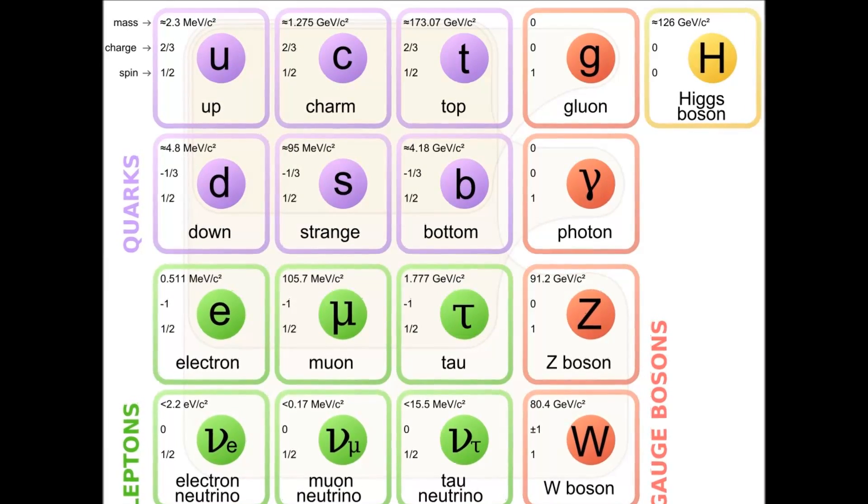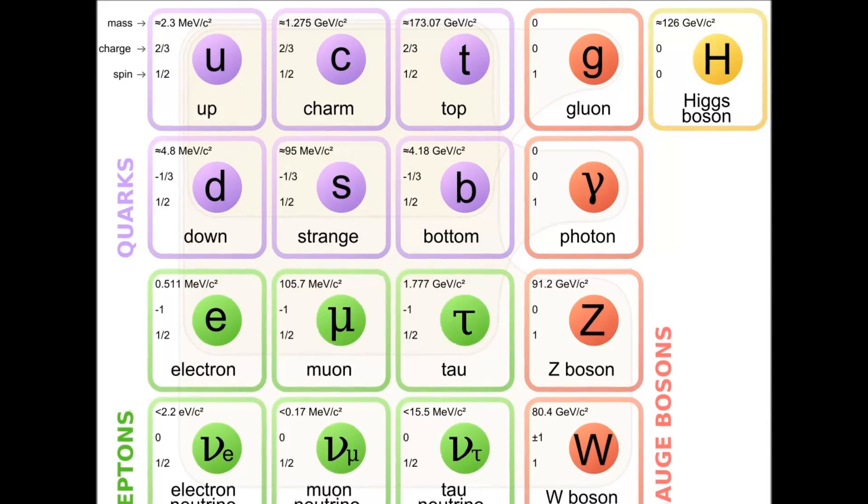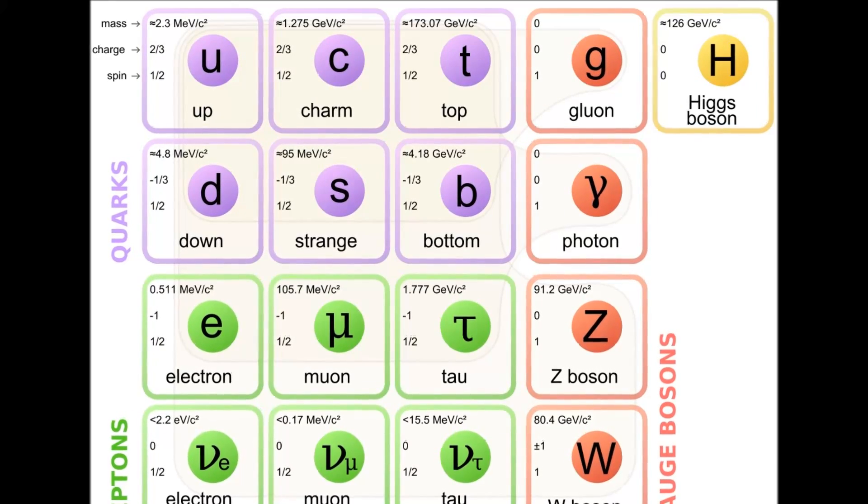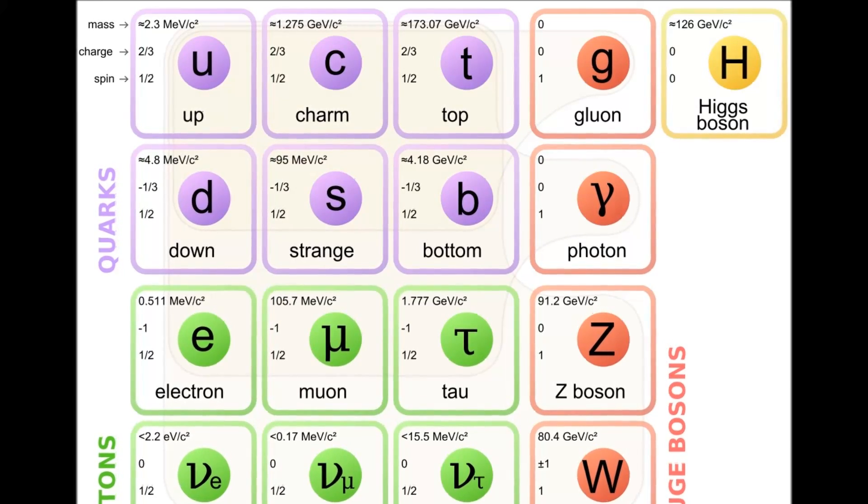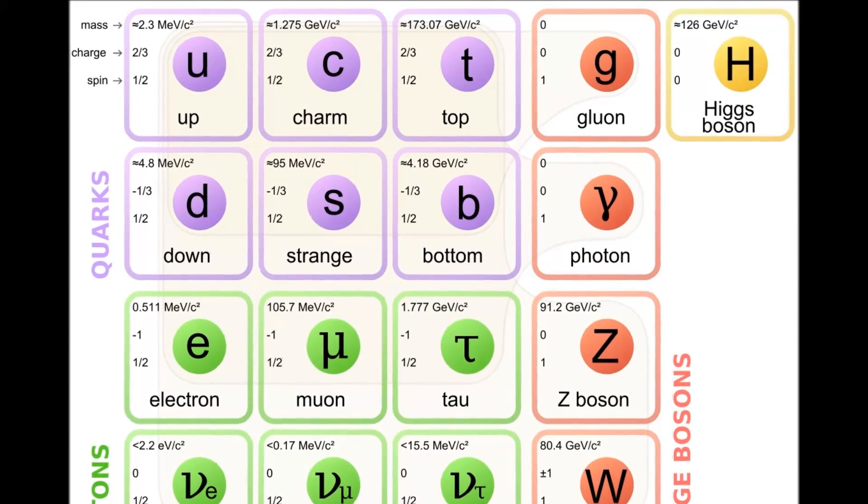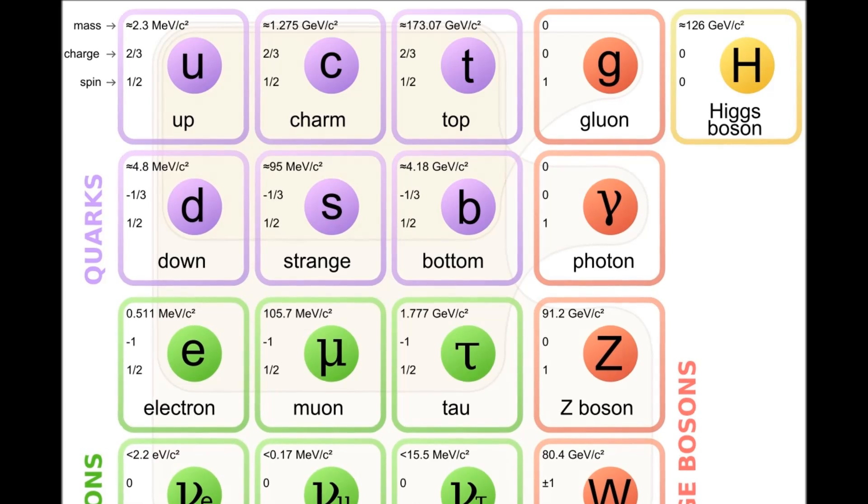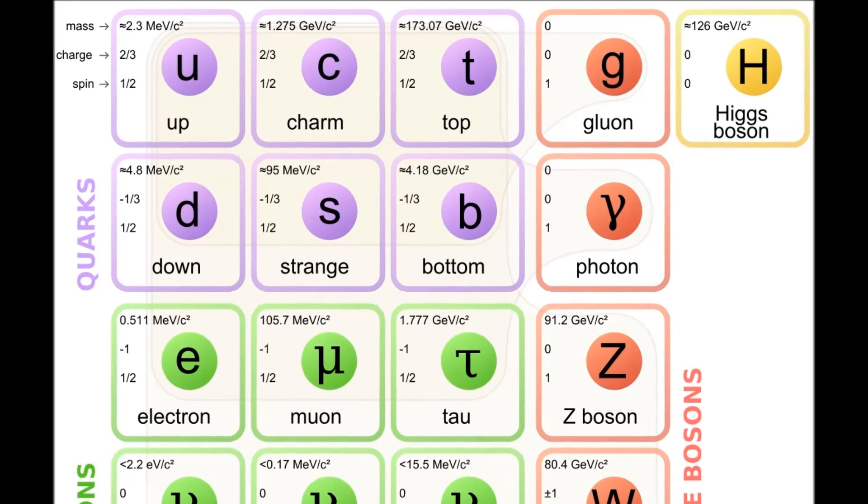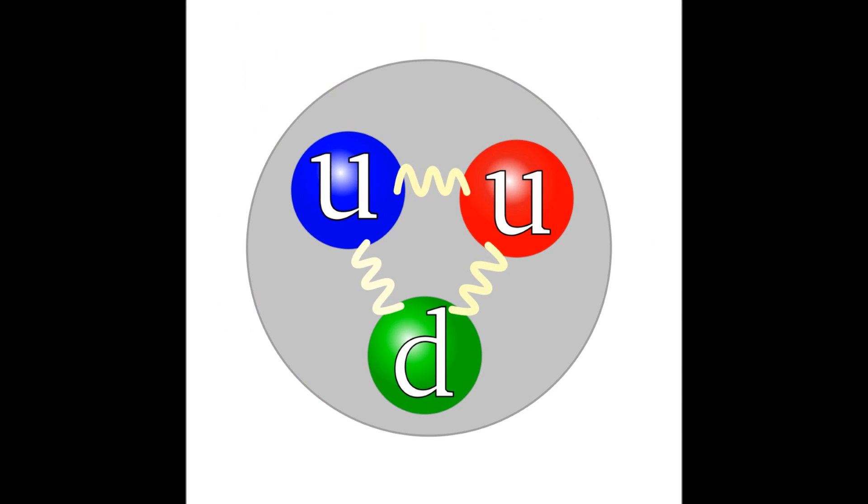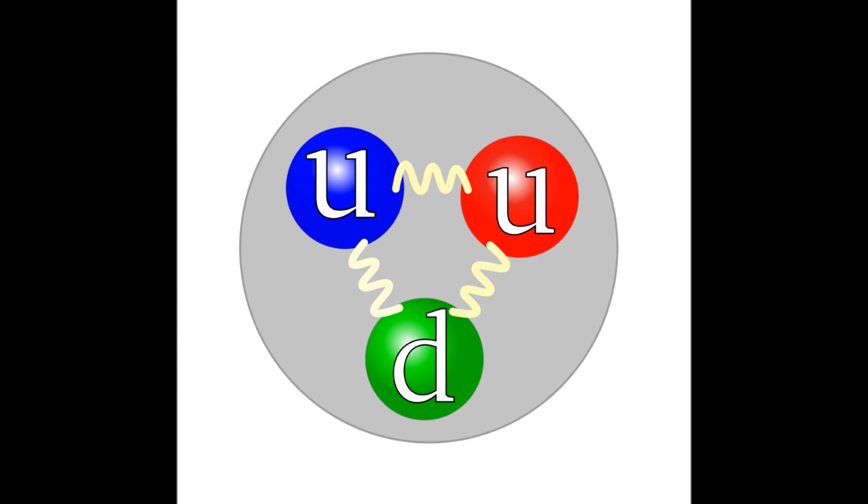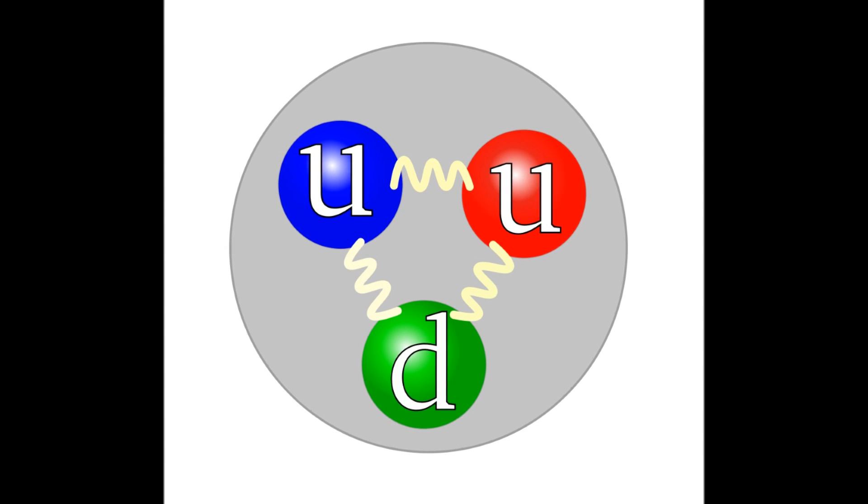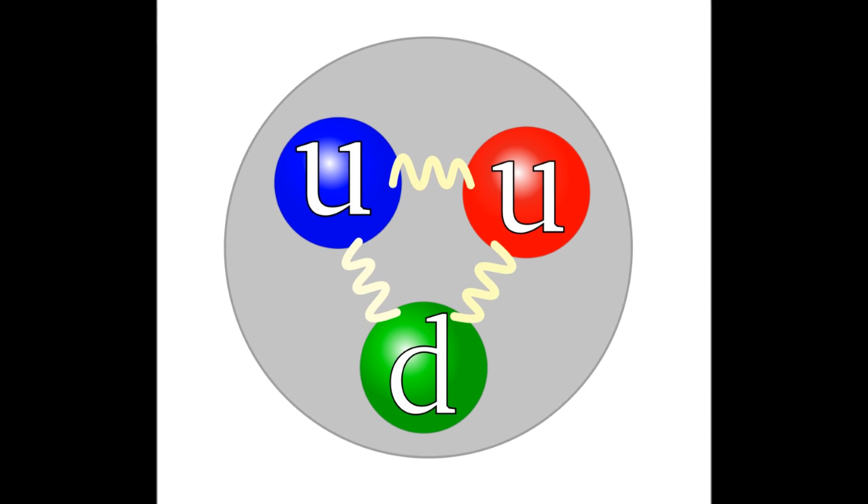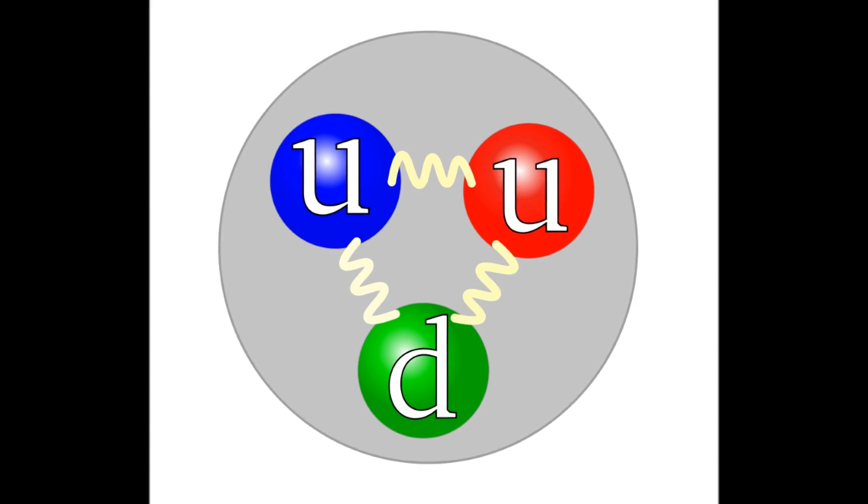Now quarks come in six varieties called flavors. These include the up quarks, down quarks, strange quarks, charm quarks, bottom quarks and top quarks. Each flavor has a different mass and charge and higher mass quarks always try to decay into smaller ones. The two most common quarks are up and down. Protons and neutrons are made up exclusively of these. Every proton contains two ups and a down whereas neutrons contain two downs and an up.